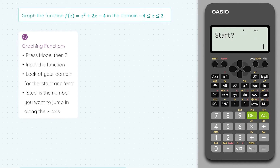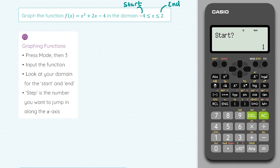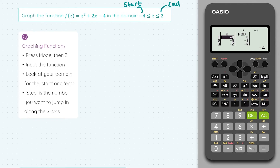Press equals as the enter button and the Start prompt pops up. Step 3 says to look at your domain for the start and the end. The start number is the smallest number in your domain, which is minus 4, and the end is 2. I type minus 4 for start and press equals, then type 2 to overwrite the end and press equals. Step 4: the step is the number you jump in along the x-axis — typically 1. So I step in 1s, going minus 4, minus 3, minus 2, minus 1, 0, 1, 2, then press equals to get our table.